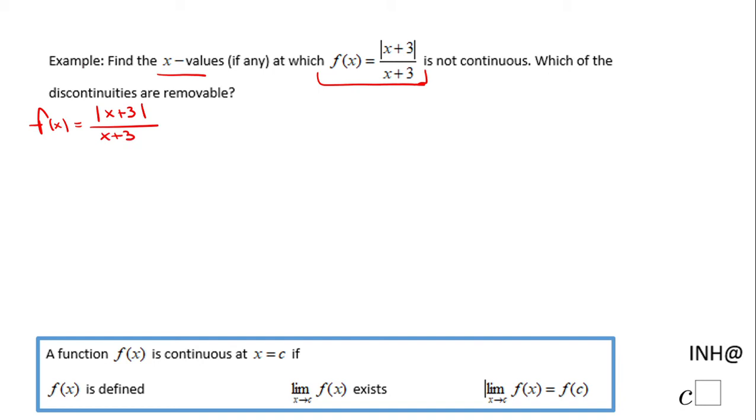So when do we have to worry about this function? We have to worry when x plus 3, the denominator, is equal to 0. That happens at x equals negative 3. Because when x is negative 3, we get a 0 in the denominator. But also we get 0 over 0 if we plug it in here. So that is very interesting.